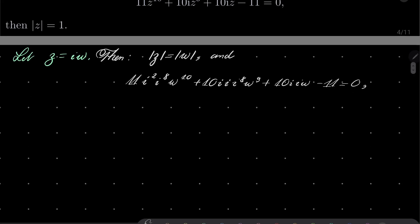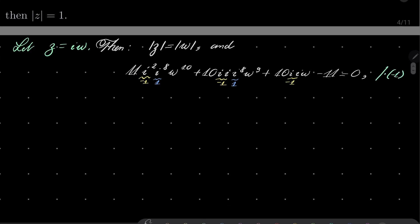Now notice that i squared is just minus 1, and i to the power of 8 is minus 1 to the fourth power, which equals 1. Substituting these values, and multiplying both sides by minus 1, we get the simpler equation: 11w to the 10th power plus 10w to the 9th power plus 10w plus 11 equals 0.